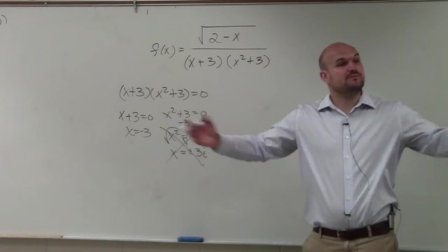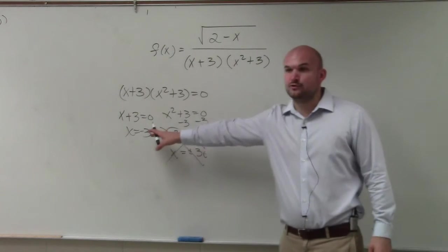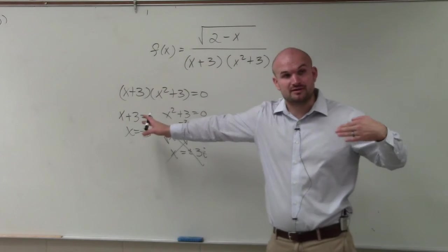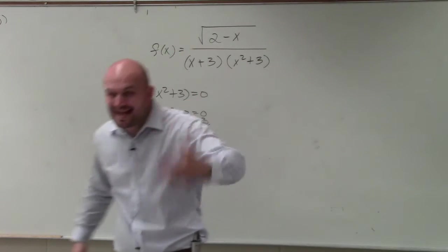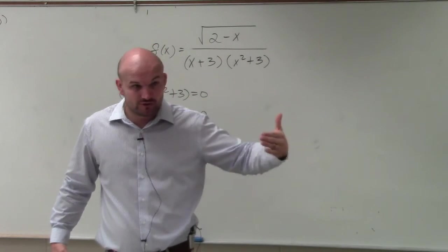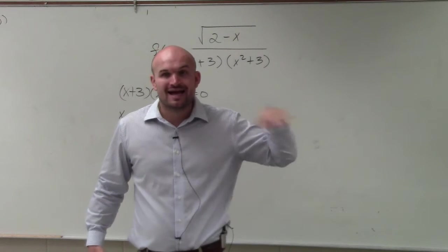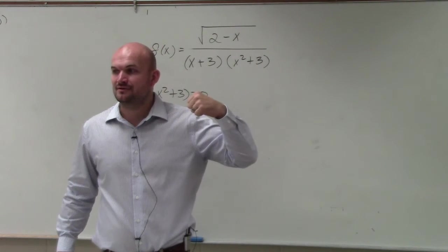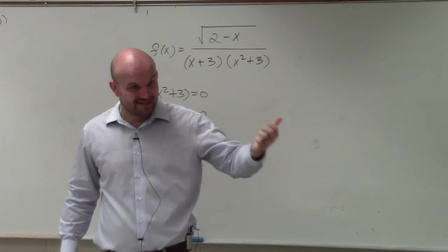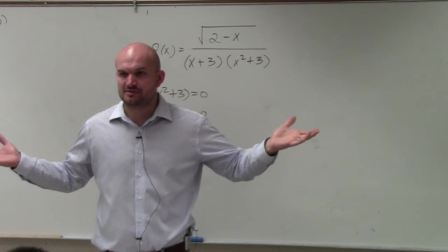So now, our domain is all real numbers, except x cannot equal negative 3. However, there is another restriction. And that other restriction was any number under a square root, or even radical, has to be greater than or equal to 0. We just can't take the square root of negative numbers, correct?